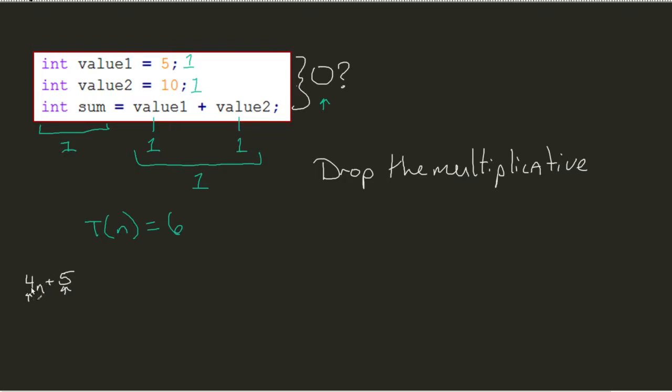I really just needed the dependent number. And so if we looked at this T of N right now, it's a 6. Okay, that doesn't give me much, because there's no N. What do you mean, drop the multiplicative?